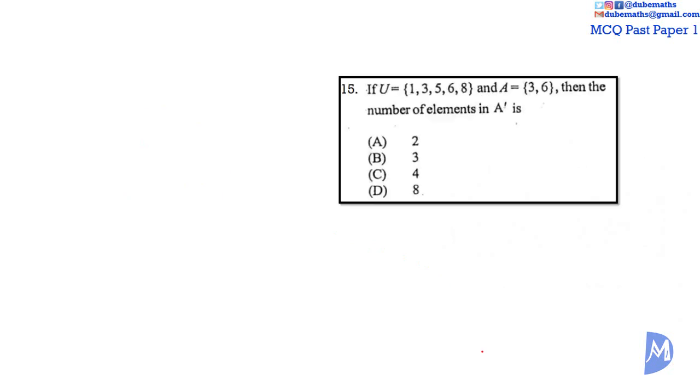Question 15. A complement is all the elements of the universal set that is not in A. Thus, A complement is equal to the set of 1, 5, 8. The number of elements in A complement is thus equal to 1, 2, 3. It's equal to 3. The answer is B.